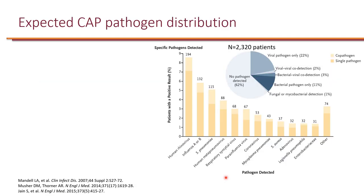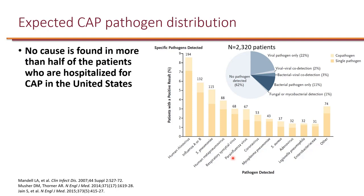Let's take a look at the CDC EPIC study published in 2015. It was a population-based surveillance study for community-acquired pneumonia requiring hospitalization among adults 18 years of age or older in five hospitals in Chicago and Nashville. This study looked at 2,320 patients, trying to identify common causes of CAP requiring hospitalization. In general, no cause is found in more than half of patients hospitalized for CAP in the United States.